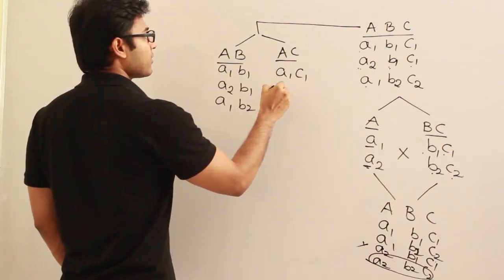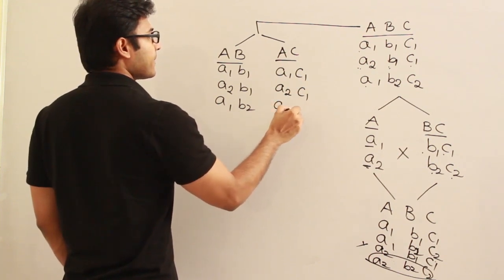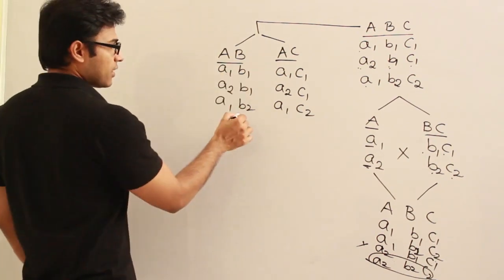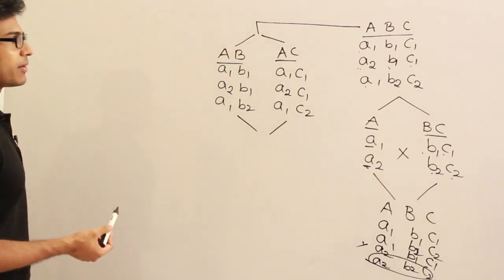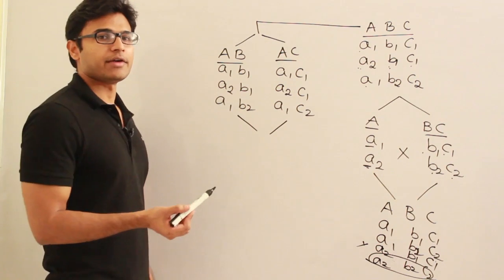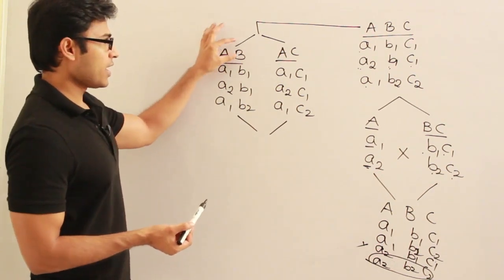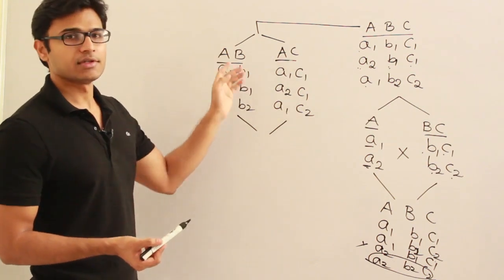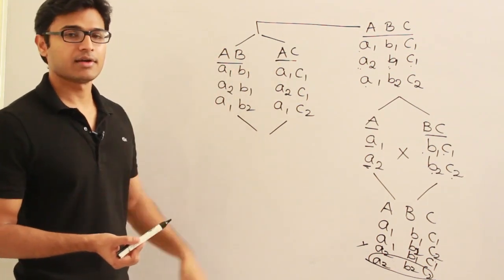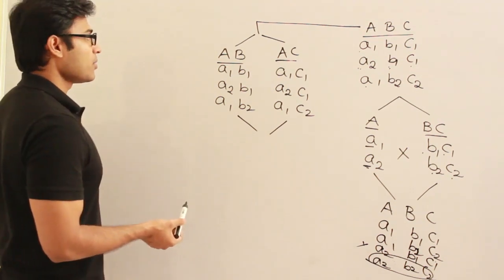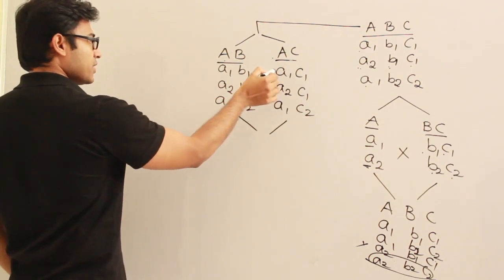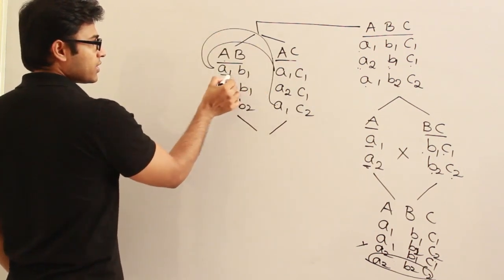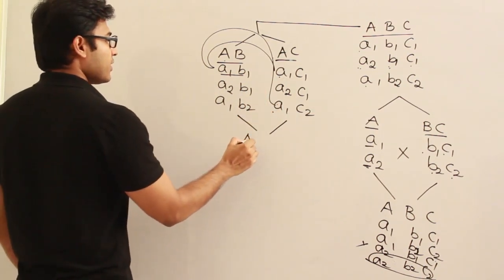The table containing A,C will contain: A1C1, A2C1, and A1C2. Now when we later need some information — for example, given a value of A we want to find C — we combine the two tables using the common attribute A. Wherever A equals A1, we merge the corresponding tuples from both tables. So A1 from the A,B table is combined with all A1 entries in the A,C table.